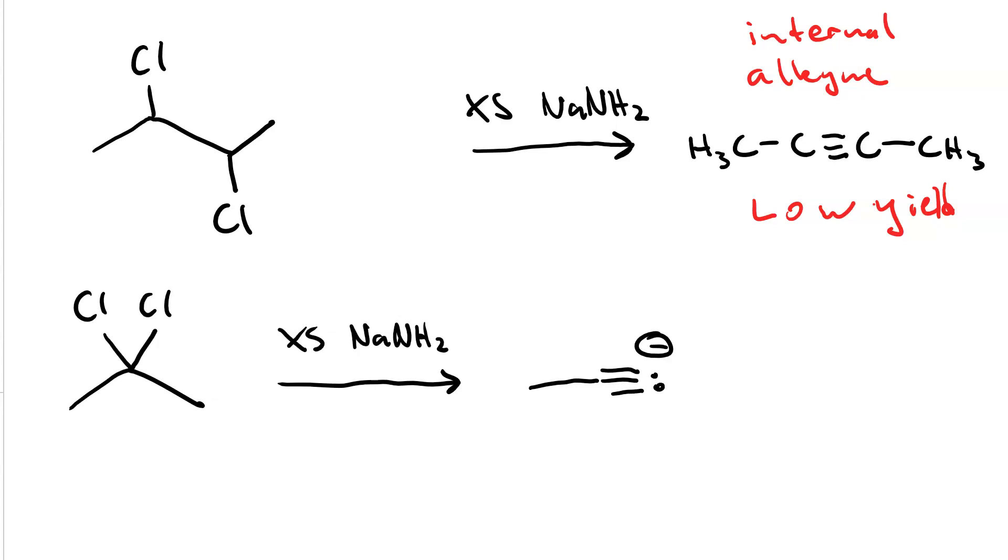If we react a propynide ion with a methyl halide like methyl bromide, it will actually do an SN2 reaction where the alkynide ion acts as a nucleophile and the bromide leaves. And now we've got our internal alkyne in a high yield.